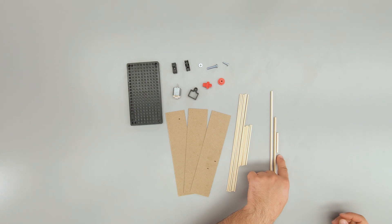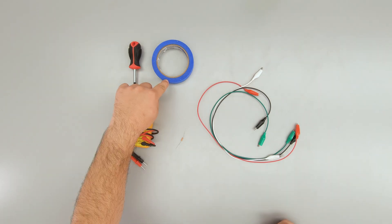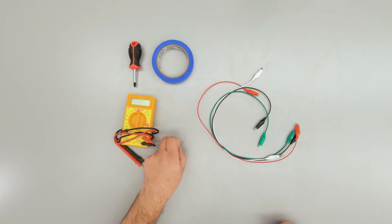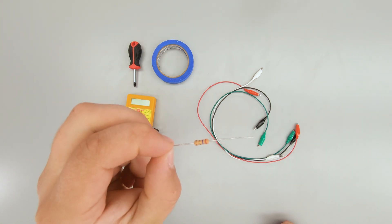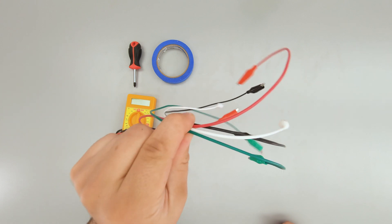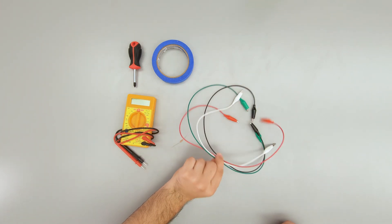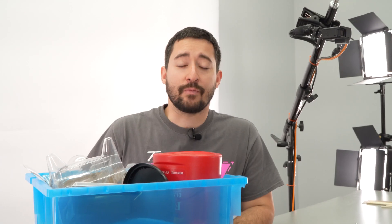And you will need to supply these items: a Phillips head screwdriver, some tape, a digital multimeter, a 2.7 ohm resistor (which is optional), four alligator clip leads (also optional), and some recycling bin materials to make your turbine blades.